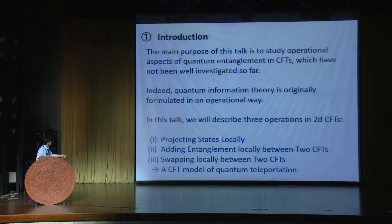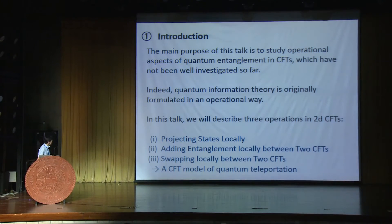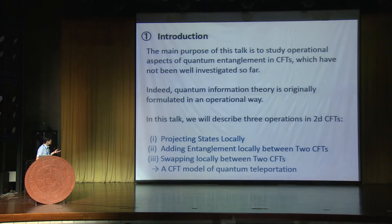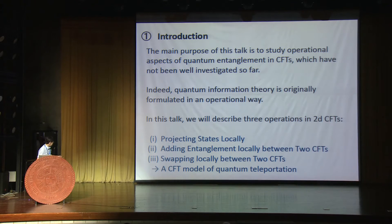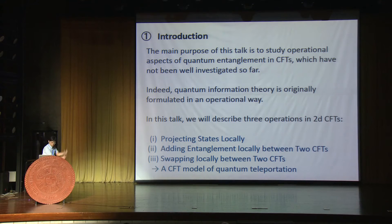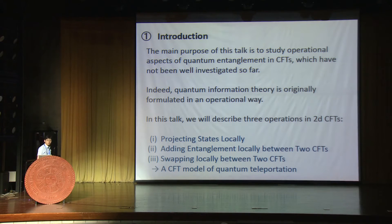The three operations are: first, projection measurement — we project down to particular states; second, adding entanglement, meaning preparing some EPR pairs on particular parts of the CFTs, where we take a double copy of CFTs and put some EPR pairs in locally; and finally, swapping — we have two CFTs, take two regions, swap them, just replace with each other, and study time evolutions.